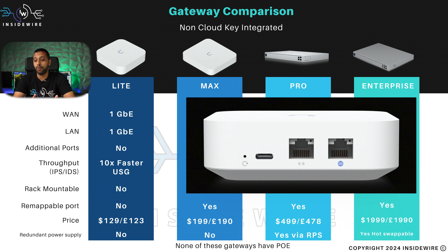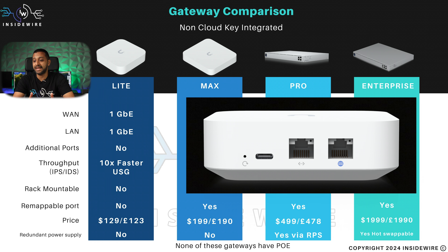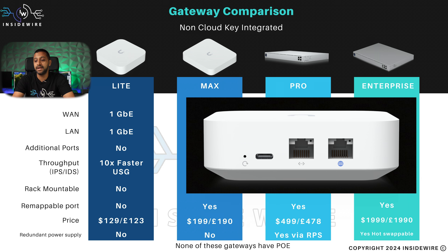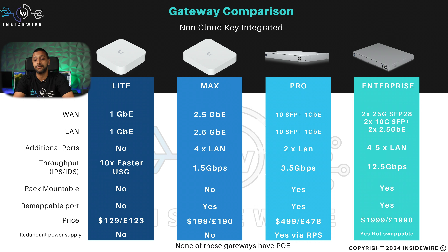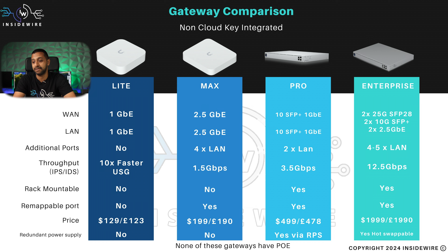For the Gateway Lite you have one gig WAN and one gig LAN. There are no additional ports — only those two ports. The throughput of the IPS/IDS just says it's 10 times faster than the USG but doesn't actually give a figure. It's not rack mountable, you can't remap any ports so there's no dual WAN capabilities, and it comes in at $129 or £123.